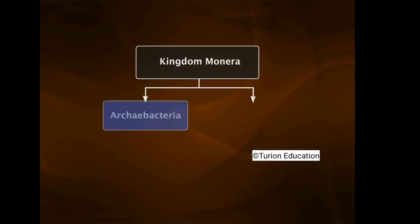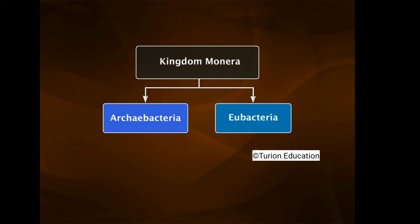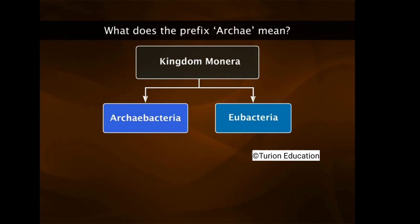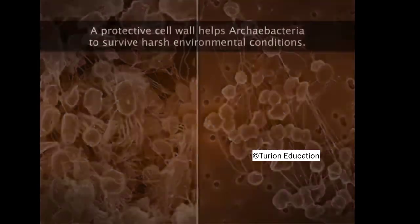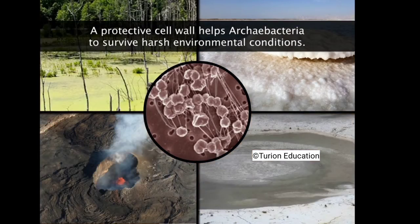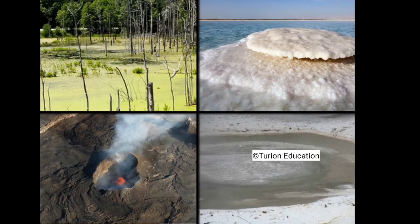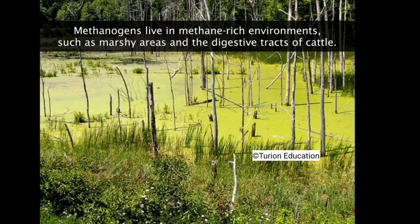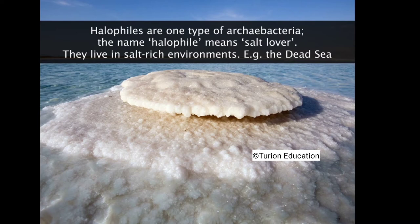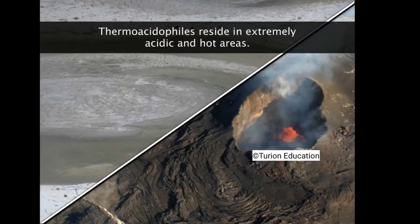Kingdom Monera is divided into two groups: archaebacteria and eubacteria. Archaebacteria are the oldest organisms on earth, living in extreme habitats due to their specialized cell walls. Based on their habitats, archaebacteria include methanogens, which live in methane-rich environments such as marshy areas and the digestive tracts of cattle; halophiles, which live in extremely high-salt areas like the Dead Sea; and thermoacidophiles, which reside in extremely acidic and hot areas such as hot sulfur springs and volcanic vents.